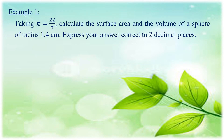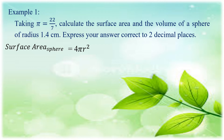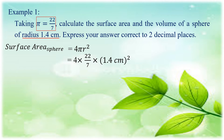Let us have example number 1. Taking pi equal to 22 over 7, calculate the surface area and the volume of a sphere of radius 1.4 centimeters. Express your answer correct to two decimal places. Using the formula for surface area, 4πR squared, with R equal to 1.4 cm and pi equal to 22 over 7, we get 4 times 22/7 times 1.4 squared, which equals 24.64 square centimeters.